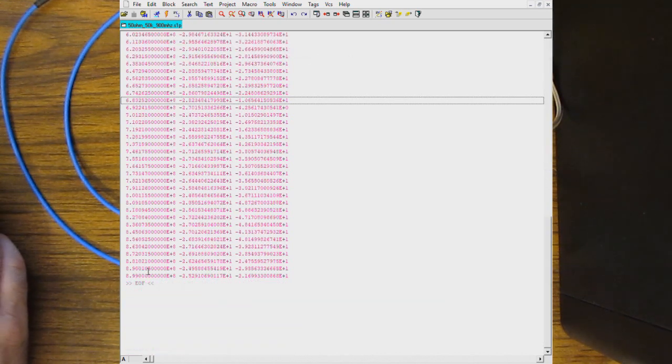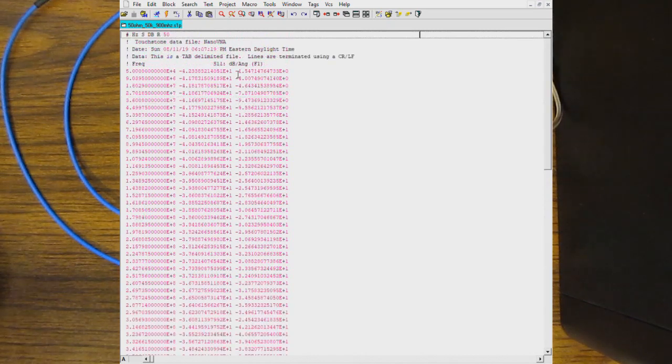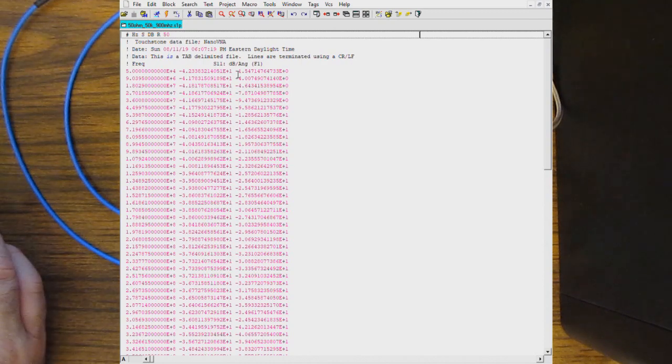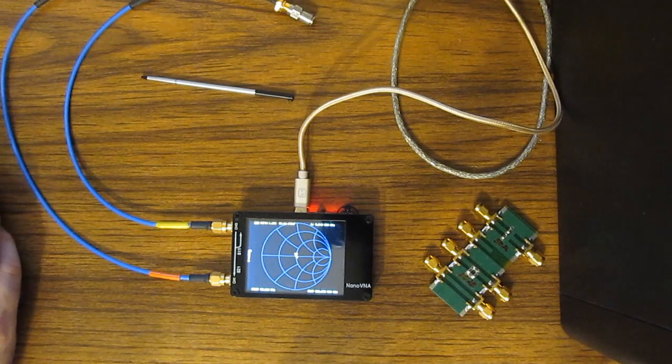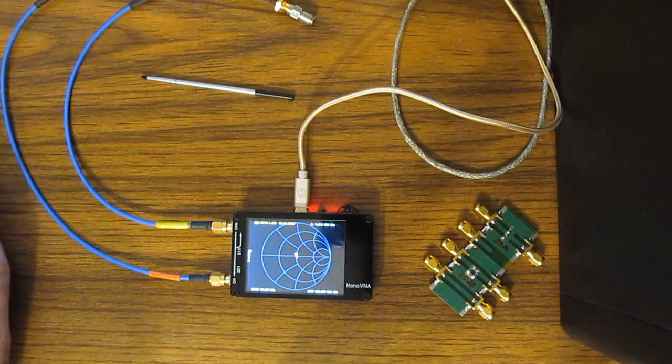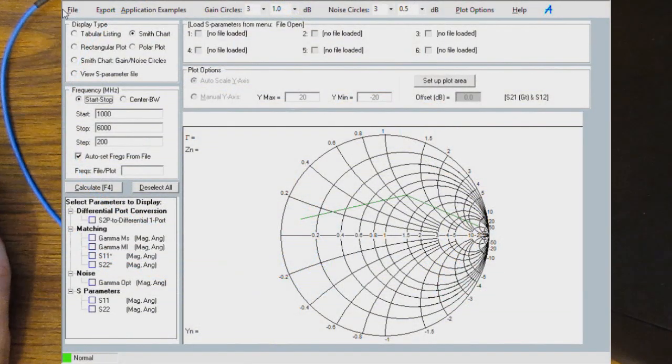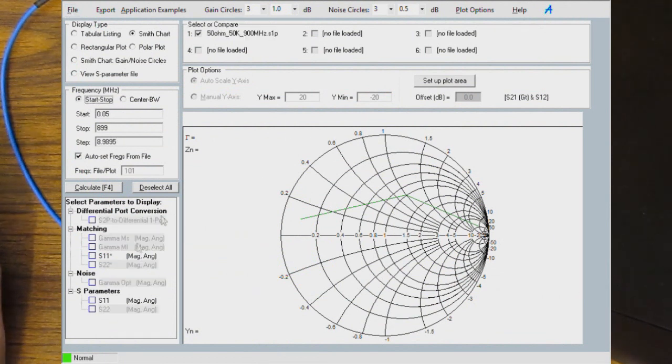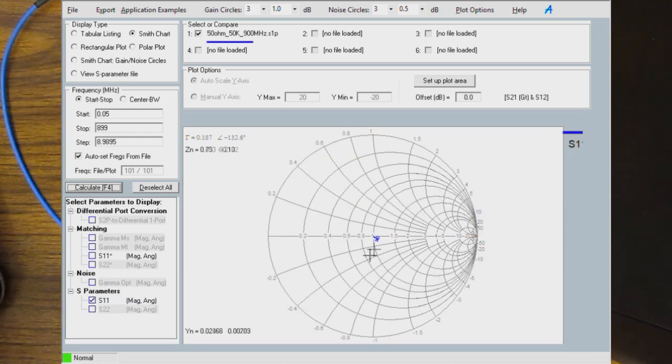So the last value in the touchstone file was 899 megahertz. The touchstone file doesn't say that you have to use dB and angle. This is just one format. The standard also accommodates multiple ports. And again if we go into AppCAD and select S parameters, select our file, open, and we'll load in our resistor. And again we'll select the S parameters and calculate. You can see our S parameters being displayed on the Smith chart. Again basically the same thing as what I'm showing on our LabVIEW software.